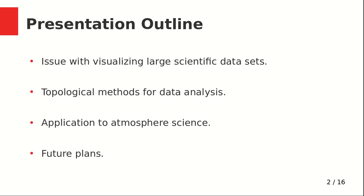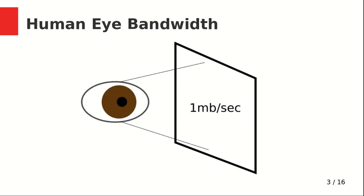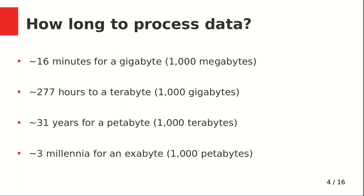First, I will tell you about some of the issues with visualizing large scientific datasets. Then I will introduce some of the topological methods I use to analyze those datasets. Scientists from the University of Pennsylvania in 2006 estimated that the bandwidth of the human eye — the amount of information it can process in a single second — is about one megabyte. This is already a big problem because datasets are growing bigger and bigger.